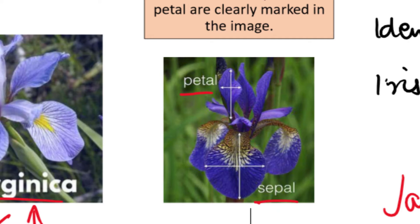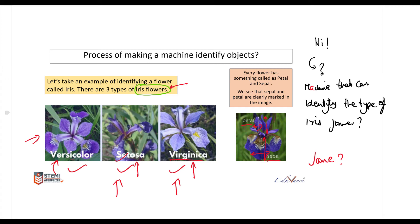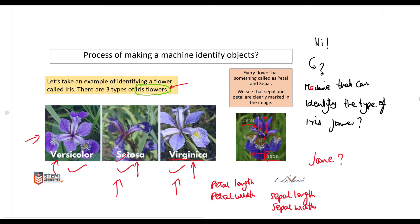The petal has the petal length and the petal width. Similarly, the sepal has the sepal length and the sepal width. Jane tells you that based on the petal length, petal width, sepal length, and sepal width, you can determine whether the flower is a versicolor, setosa, or virginica.